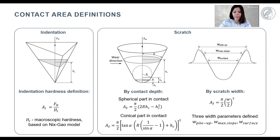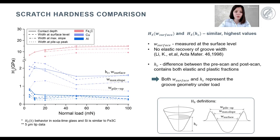Here you can see the plot demonstrating how the average scratch hardness changes depending on the scratch contact area definition, the material, and the normal load. The first thing we see is that the contact depth and width at the surface level lead to very similar values of scratch hardness. Because we define contact depth as the difference between the pre-scan and scratch segment, it contains both elastic and plastic fractions of the depth. At the same time, the width of the imprint does not recover during unloading, and this is why both contact depth and the width at the surface level represent the scratch groove geometry under load. Both these hardness values are the highest because they assume that the side pile-up does not contribute to the contact area by definition.